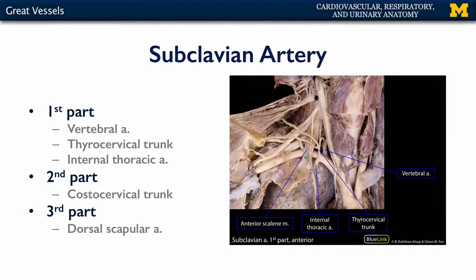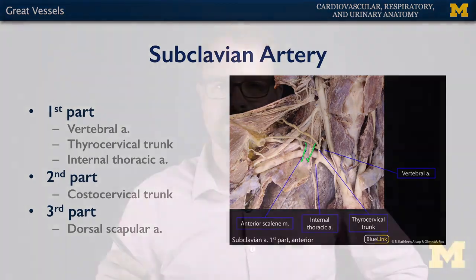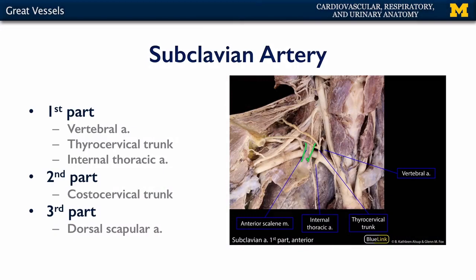The second part of the subclavian artery, which is obscured by the anterior scalene, provides us with the costocervical trunk. The costocervical trunk supplies blood to the two superior-most intercostal spaces as well as some of the deep muscles of the neck. The third part of the subclavian artery gives rise to the dorsal scapular artery, typically.